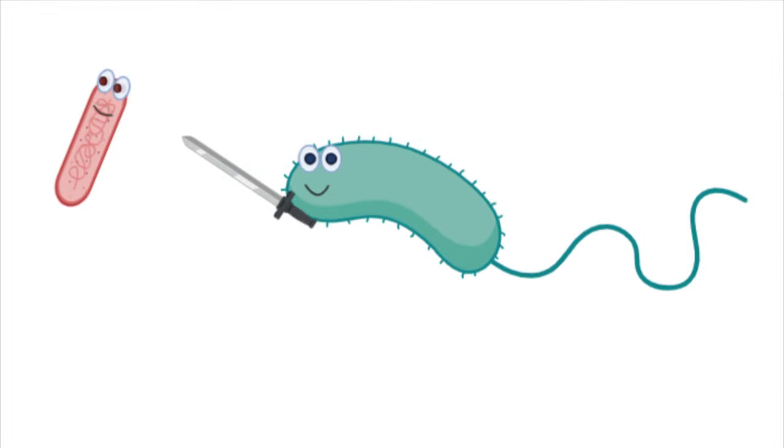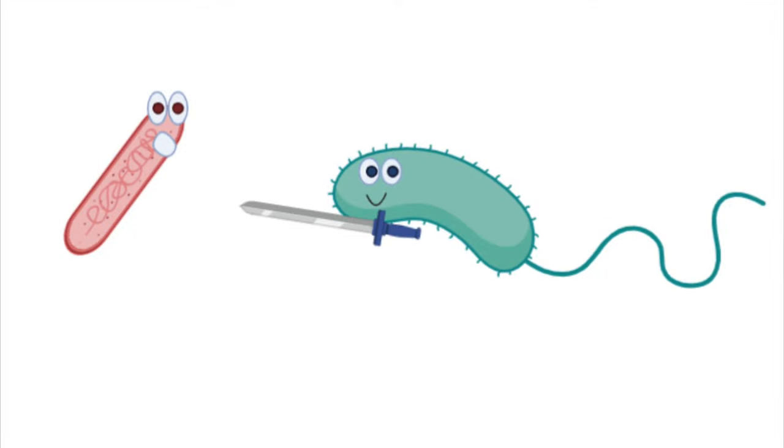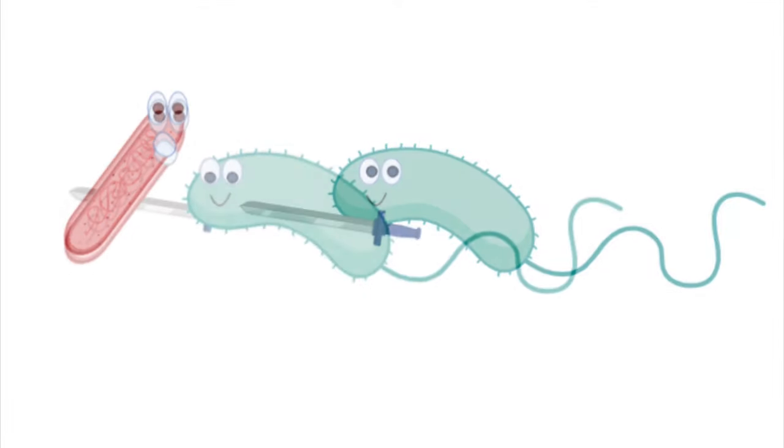This spear steals neighboring DNA and keeps it for itself. In its natural aquatic environment, when chitin is available, the Vibrio cholerae attacks and steals genes that make them more resistant to threats.